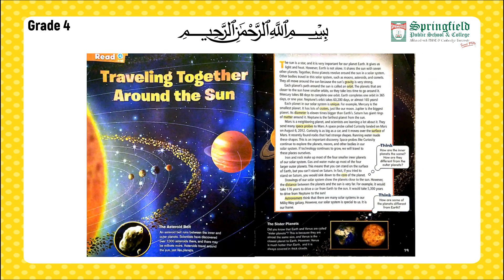I hope you enjoyed this text. It was basically about traveling together around the Sun. The Sun is a star and Earth is our most important planet — the only one on which life exists. Other planets have unique features: Mercury completes its orbit in 88 days, while Earth completes its orbit in 365 days, making one year.